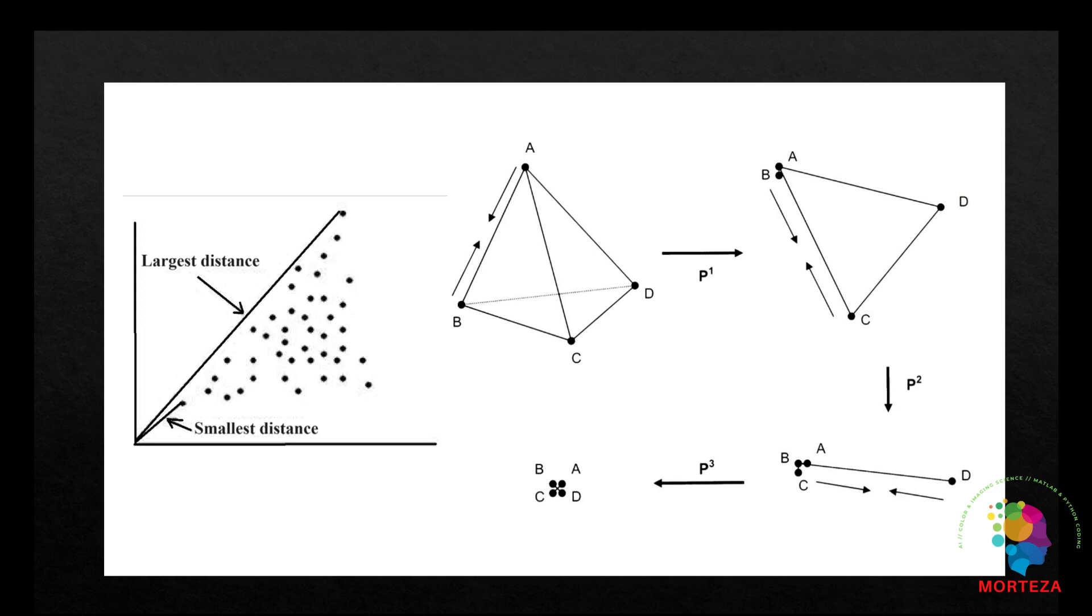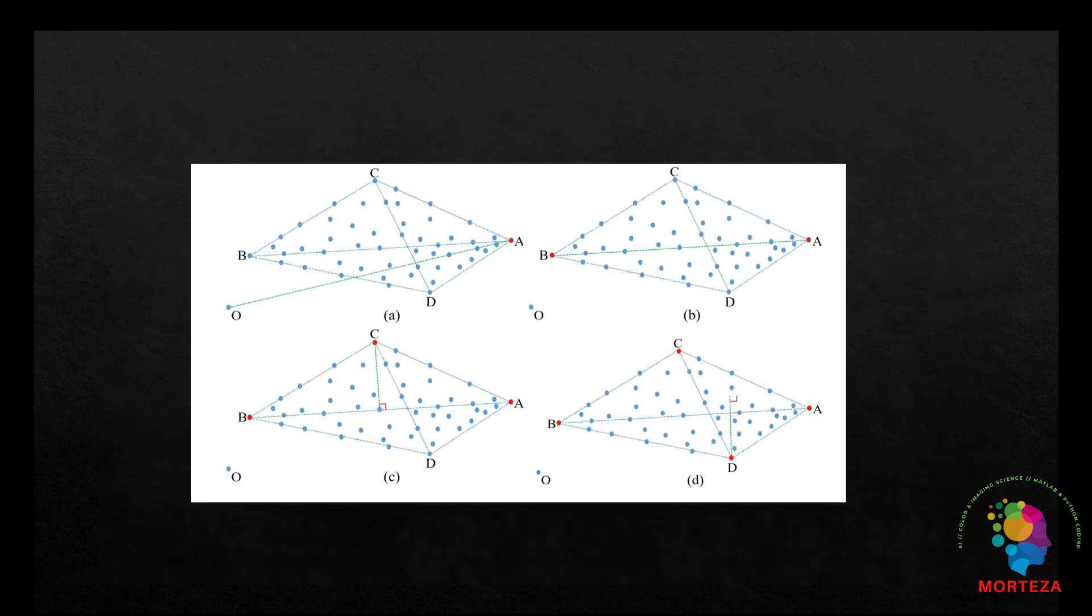By plotting the volume of each linearly independent set, which is the square root of the determinant, the number of distinct endmember spectra can be chosen from the graph to form the final endmember set. This figure here shows the process of extracting four endmembers.